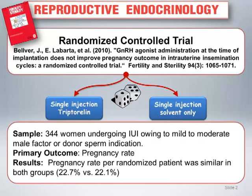The sample consisted of 344 women undergoing intrauterine insemination. The primary outcome of the trial was pregnancy rate, defined as a positive beta-HCG result after an IUI cycle.